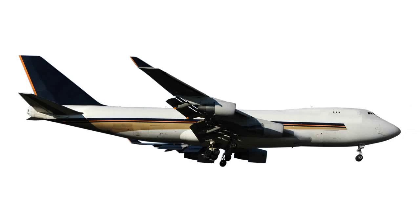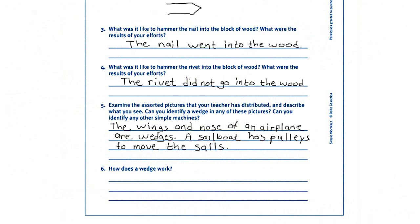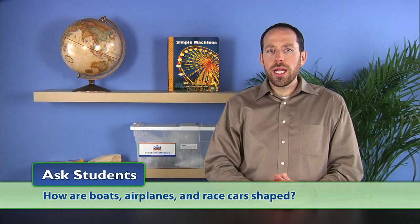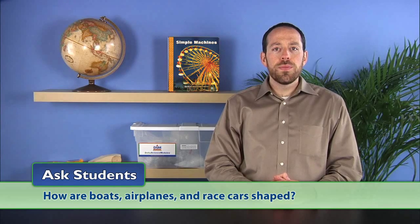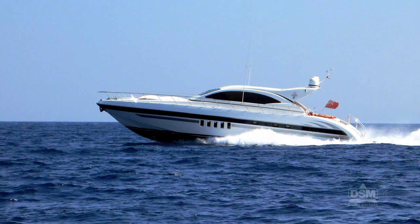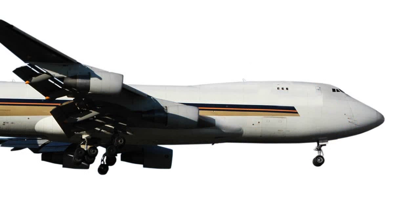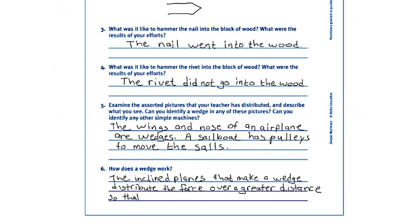Finally, distribute pictures of boats, airplanes, and race cars to the teams. Have the students examine the pictures and record their observations on activity sheet 10. Ask students, how are boats, airplanes, and race cars shaped? Guide students to understand that the outsides of these objects are wedge-shaped to allow them to separate the air or water as they move through it. Then, instruct students to answer question 6 on their activity sheets.